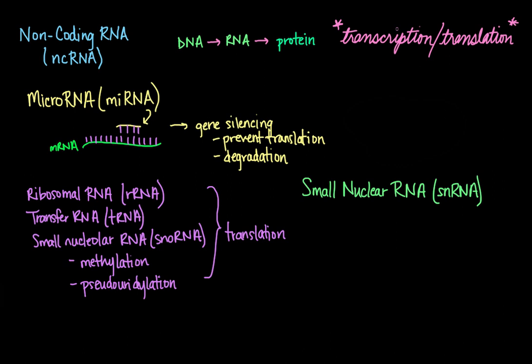Small nuclear RNAs get their name from the fact that the average length of these RNA molecules is approximately 150 nucleotides, and their primary function is in the processing of pre-mRNA in the nucleus.